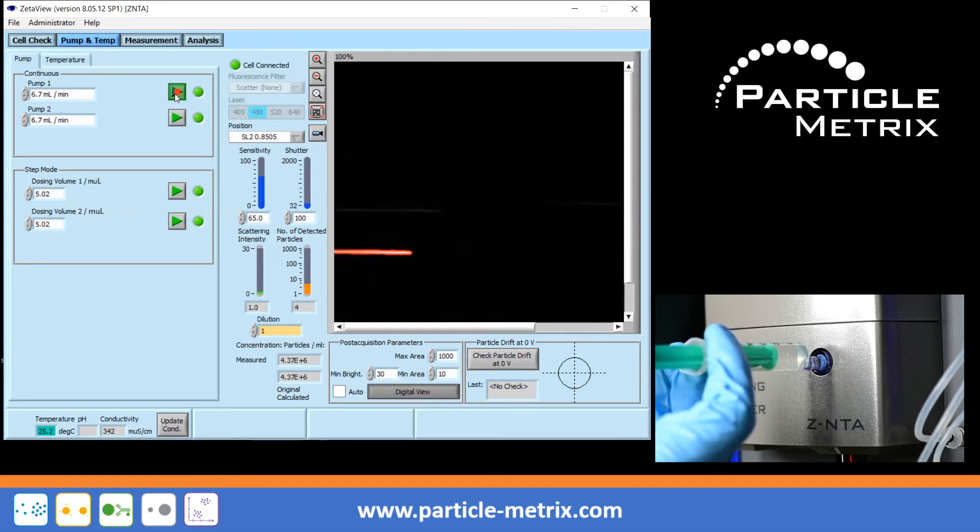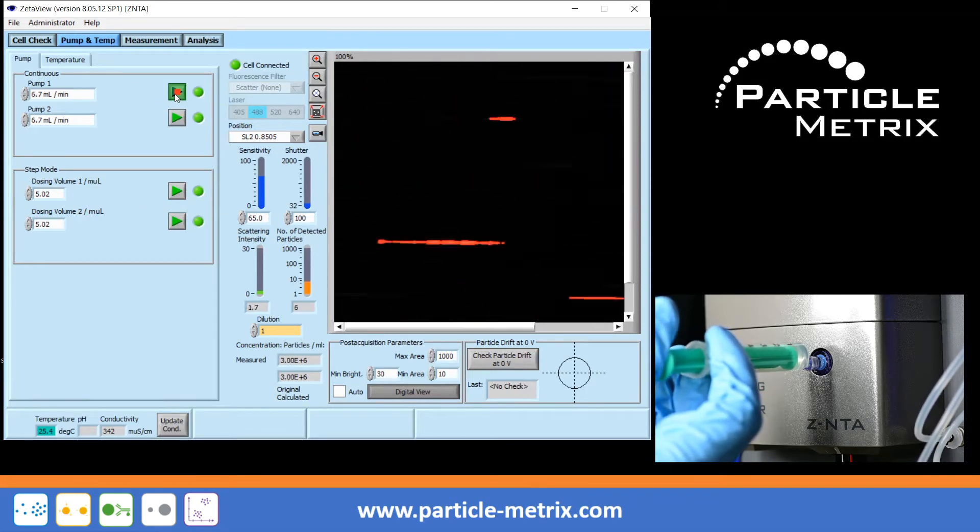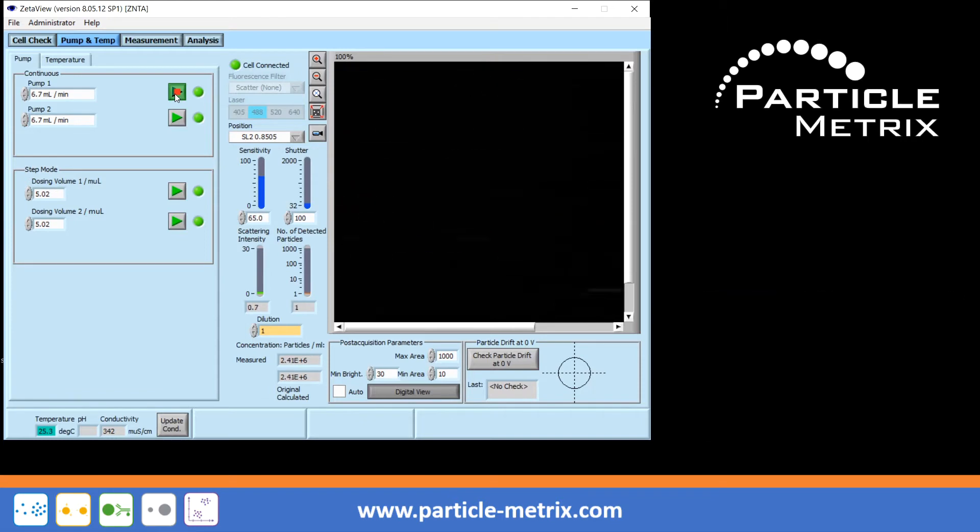By pumping and simultaneously injecting liquid from the front, the dead volume between the injection valve and the measuring cell in the cell assembly is also filled with liquid.